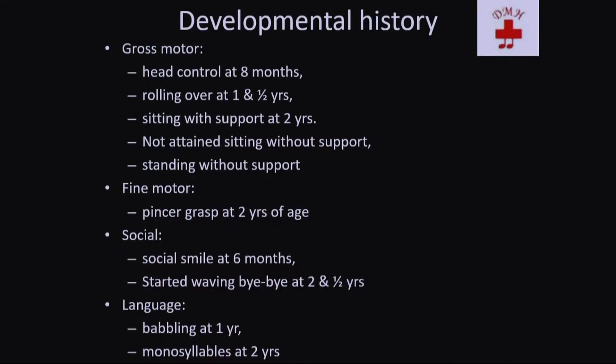Developmentally, regarding gross motor milestones: head control was present at eight months, rolling over at one and a half years, and sitting with support at two years. However, the child was not able to sit without support, neither stand without support. Fine motor: pincer grasp was present at two years of age. Social milestone: social smile at six months.